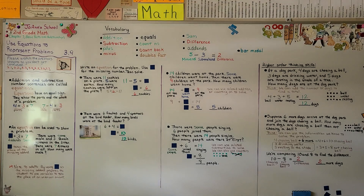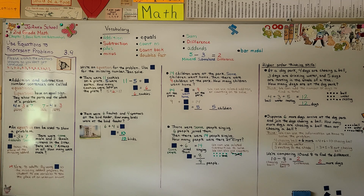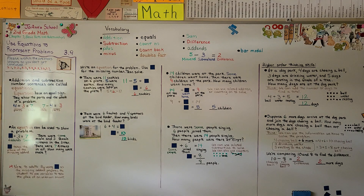Remember, you can use a related addition or subtraction equation to help you solve, or you could use counters to find out what the square is equal to. In our next lesson, 3.10, we're going to do some word problem solving with equal groups. Have a really great day and I'll see you next time. Bye!